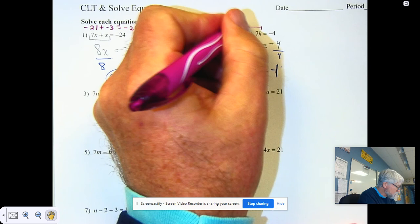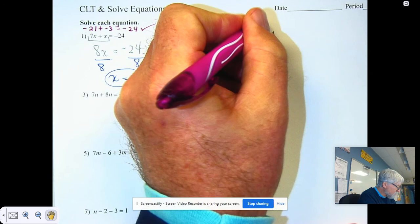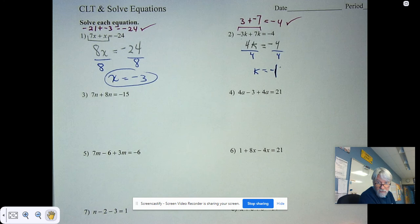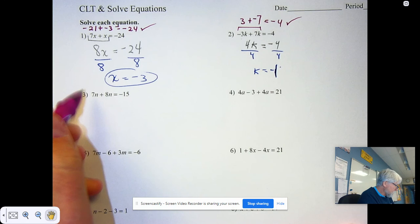Negative 1. Our check. Negative 1 times negative 3 is 3. Plus 7 times negative 1 is negative 7. 3 plus negative 7 does, in fact, equal negative 4. If you have trouble with the calculations, use your calculator.